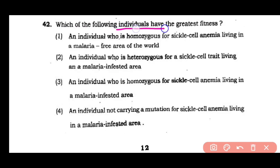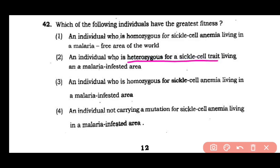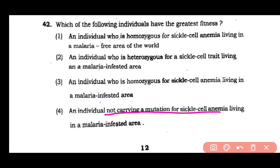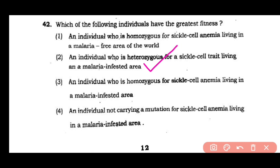Question number 42: Which of the following individuals has greatest fitness? Option 1: individual homozygous for sickle cell anemia living in a malaria-free world. Option 2: individual heterozygous for sickle cell trait living in a malaria-infested area. Option 3: individual homozygous for sickle cell anemia living in a malaria-infested area. Option 4: individual not carrying the mutation for sickle cell anemia living in a malaria-infested area. The correct answer is option 2 — the individual heterozygous for sickle cell trait develops resistance against malaria, so this individual has the greatest fitness.